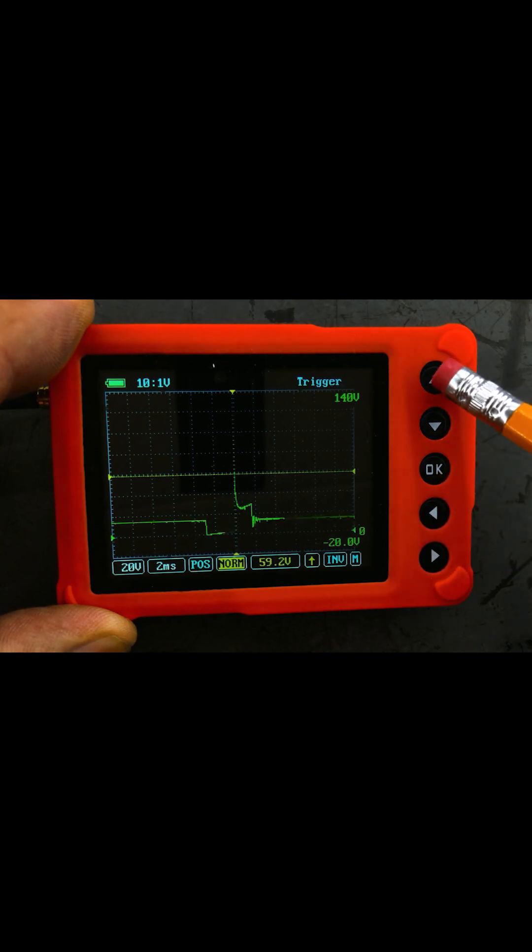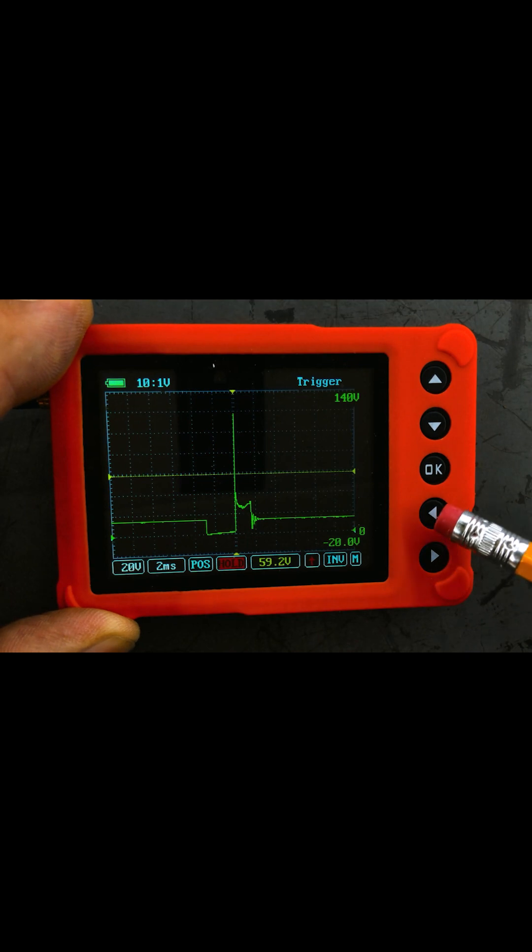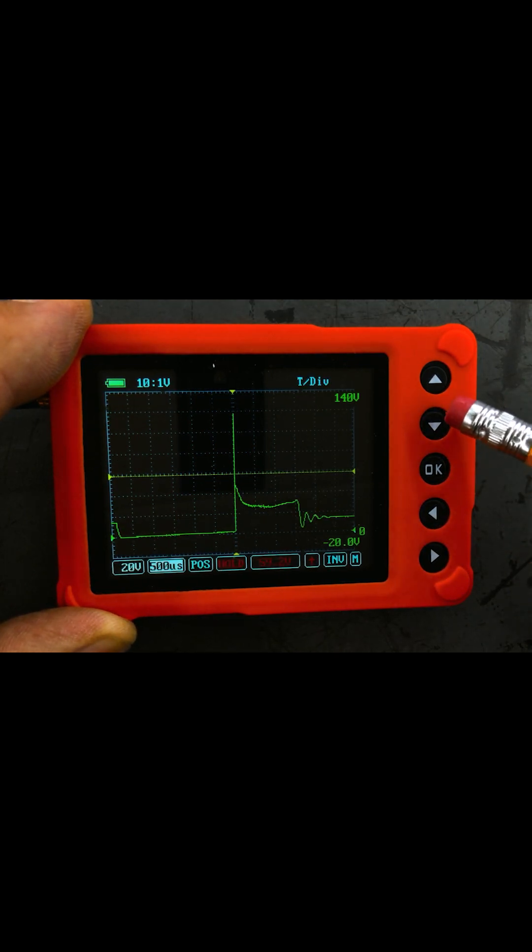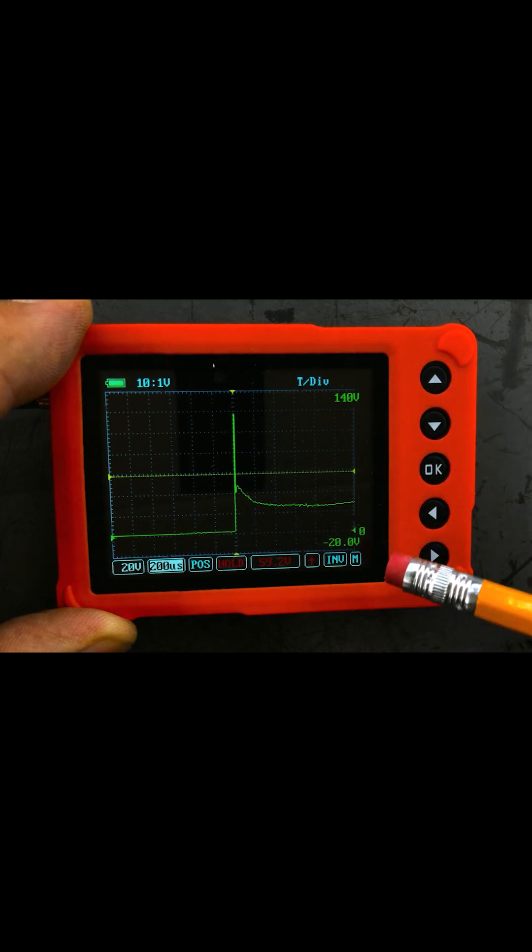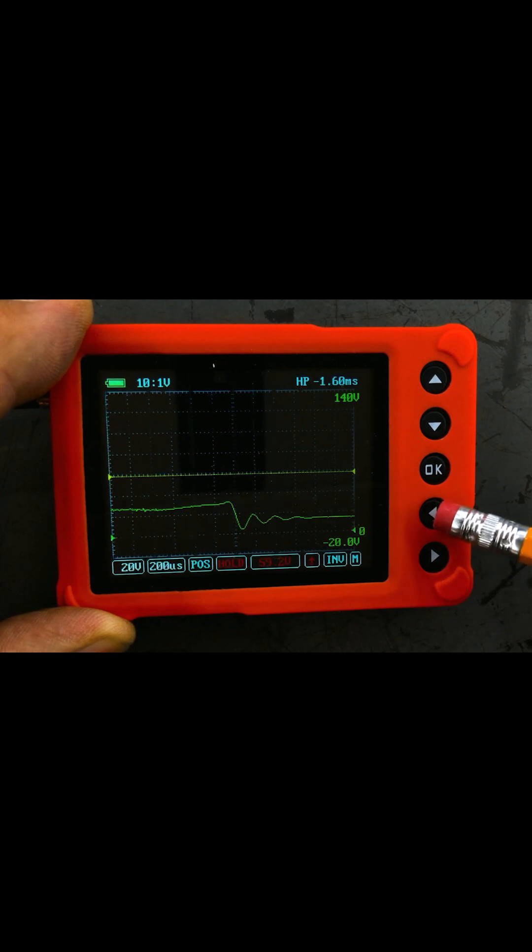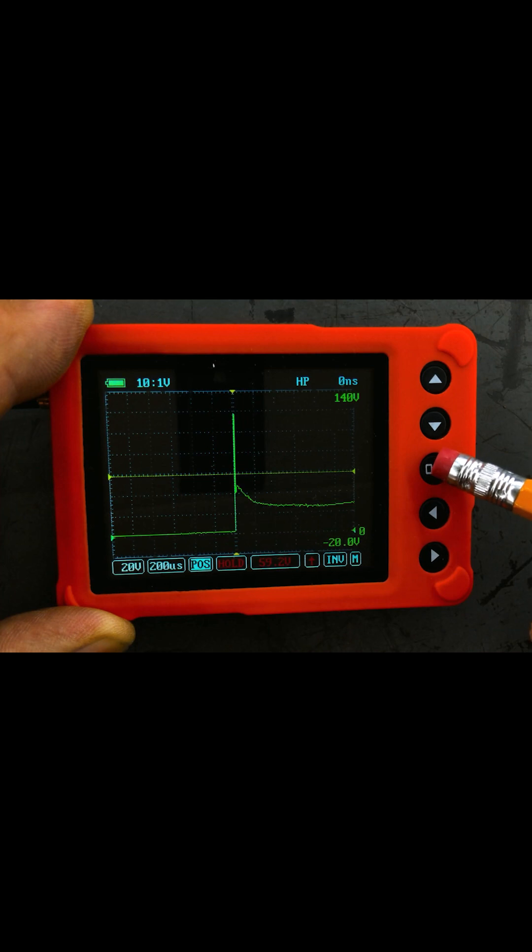Changing the trigger to single will grab the pattern and switch to hold so you can take a closer look. Changing the time to a smaller value will allow you to zoom in horizontally. Move over to the position controls and press the OK button. POS will flash on and off to let you know that you are entered scroll mode. This allows you to scroll horizontally across the screen using the left and right arrow buttons for a closer look. Press and hold the OK button to exit the horizontal scroll mode and return to the center position.